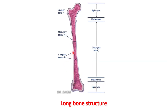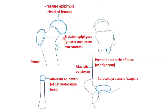The outer shell in the shaft is the compact bone and the cavity is the medullary cavity for the bone marrow. The main types are the pressure epiphysis, first of all, and then the traction epiphysis, the aberrant epiphysis, and the atavistic epiphysis.